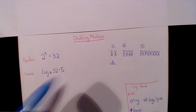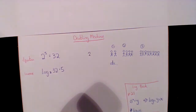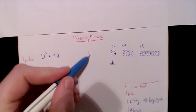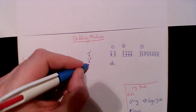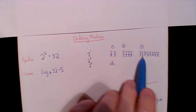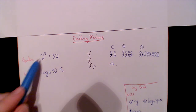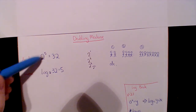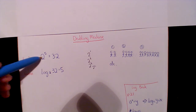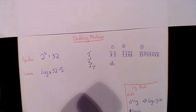Now I'm going to look at an imaginary doubling machine. This machine starts out with 2 people and then it doubles. So: 2 to the power of 1 is 2, 2 to the power of 2 is 4, 2 to the power of 3 is 8, 2 to the power of 4 is 16, and 2 to the power of 5 is 32. So 2 multiplied by itself 5 times is 32, or 2 doubled 5 times is 32.